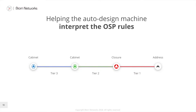For the basic rules, we use a fairly simple and abstracted set of terminologies to determine the rules around how equipment can be put together. We refer to these tiers of cables as Tier 1, Tier 2, and Tier 3.